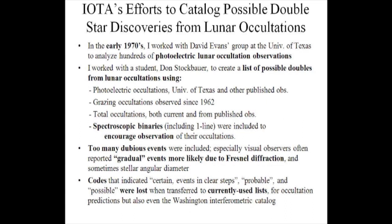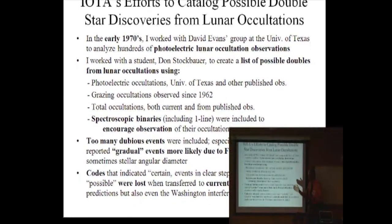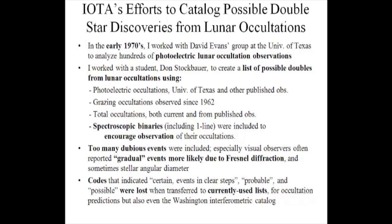Regarding IOTA's efforts to catalog possible double stars from lunar occultations: in the early 70s I worked at the University of Texas on their photoelectric lunar occultation observations, reducing hundreds of their observations. I worked with a student, Don Stockbauer, and we created a list of possible double stars from lunar occultations using various sources — our own observations at Texas, grazes and total occultations from published lists, and also spectroscopic binaries. But too many dubious events were included. We went through all these published lists and wherever observers noted a gradual event we put a flag in there, but most of those gradual events were more likely due to Fresnel diffraction effects rather than duplicity.